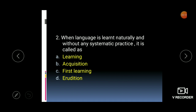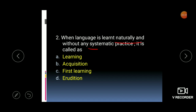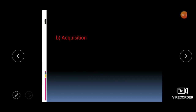Next MCQ: when a language is learnt naturally and without any systematic practice, what is it called? The key words are 'naturally' and 'without any systematic practice.' Learning involves skill and practice, whereas acquisition is natural and without any systematic process. The answer is acquisition.